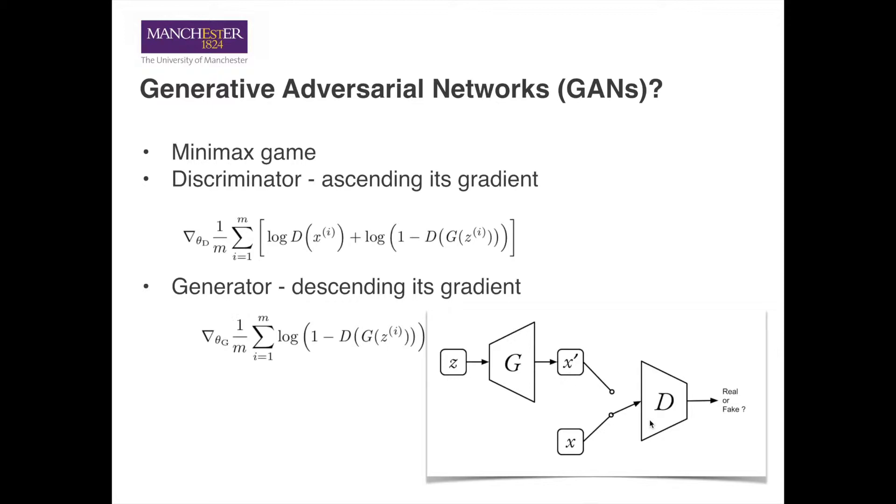Similarly, the discriminator can be represented as a function D, which can take either X or X' as input and produce the probability of the input being real. Normally in GANs, both the generator and the discriminator are realized using neural networks.